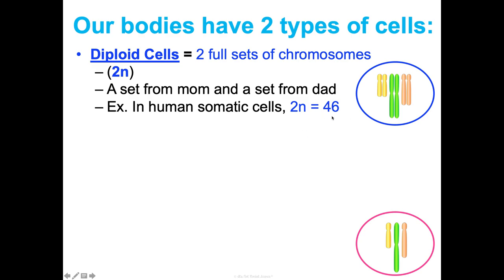All of the cells in your body have 46 chromosomes, except for your sex cells. This picture is only showing a cell that has 6 chromosomes, or 3 pairs. One of each of these pairs came from mom, and one of each came from dad. You can count 1, 2, 3, 4, 5, 6 — this would be like a fruit fly. They only have 6. Their diploid number is 6.